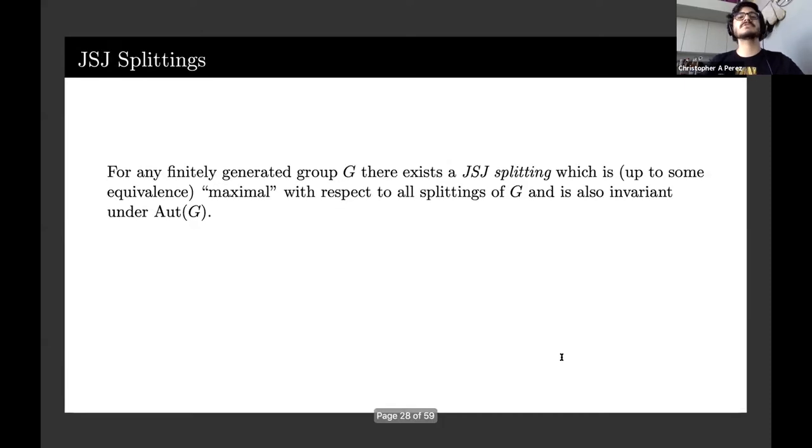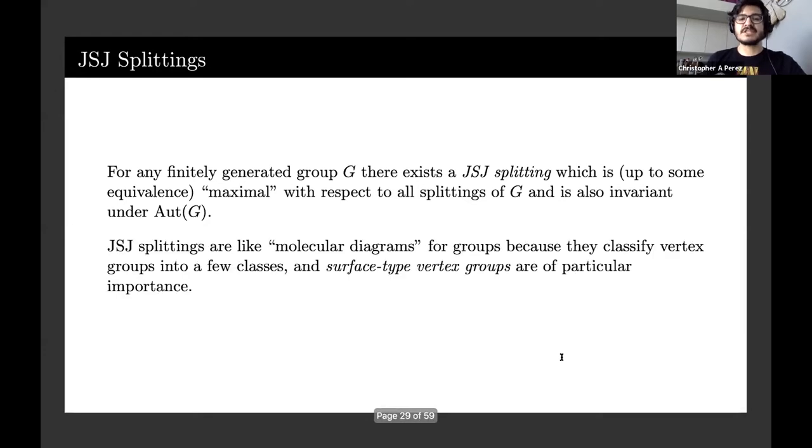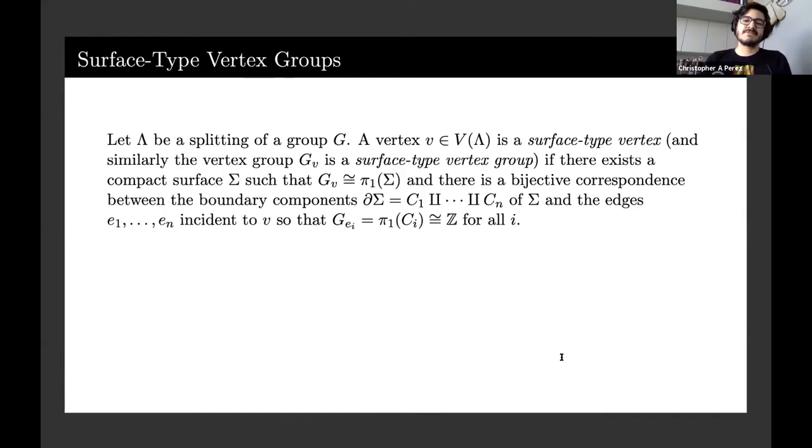For any finitely generated group G, there exists a JSJ splitting which is, up to some equivalence, maximal with respect to all splittings of G and is also invariant under the automorphisms. JSJ splittings, I like to think of them as like molecular diagrams for groups because they classify the vertex groups into a few classes. One of the most important classes are surface type vertex groups, which means you have some vertex in our graph of groups such that the corresponding vertex group is pi one of a compact surface. There's a bijective correspondence between the boundary curves and the edges coming out of that vertex x, so that the edge group there is equal to pi one of that boundary curve.